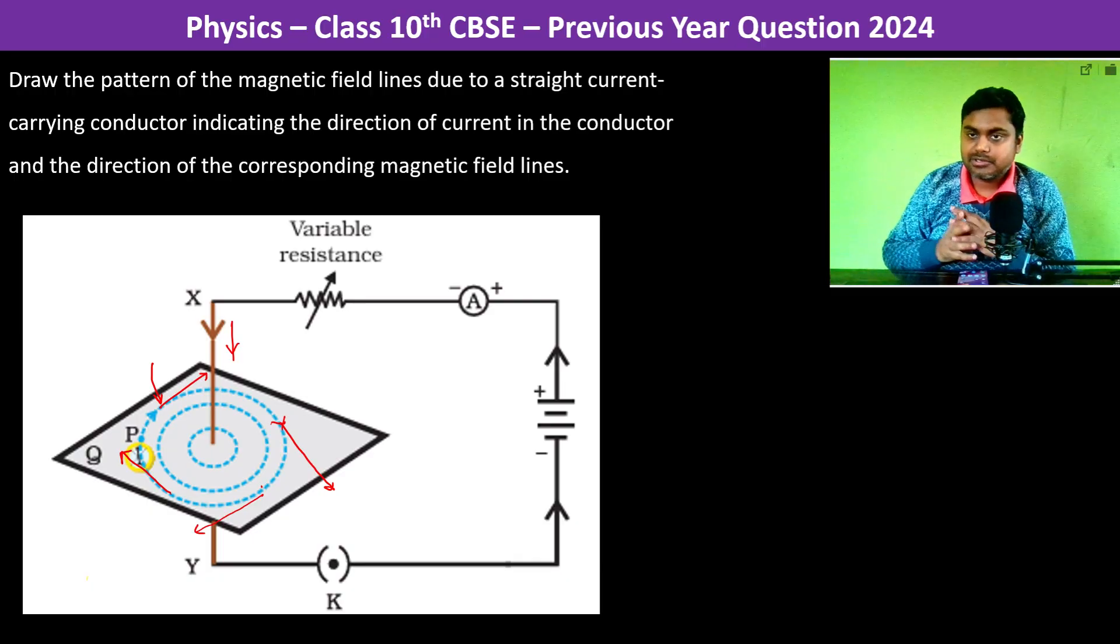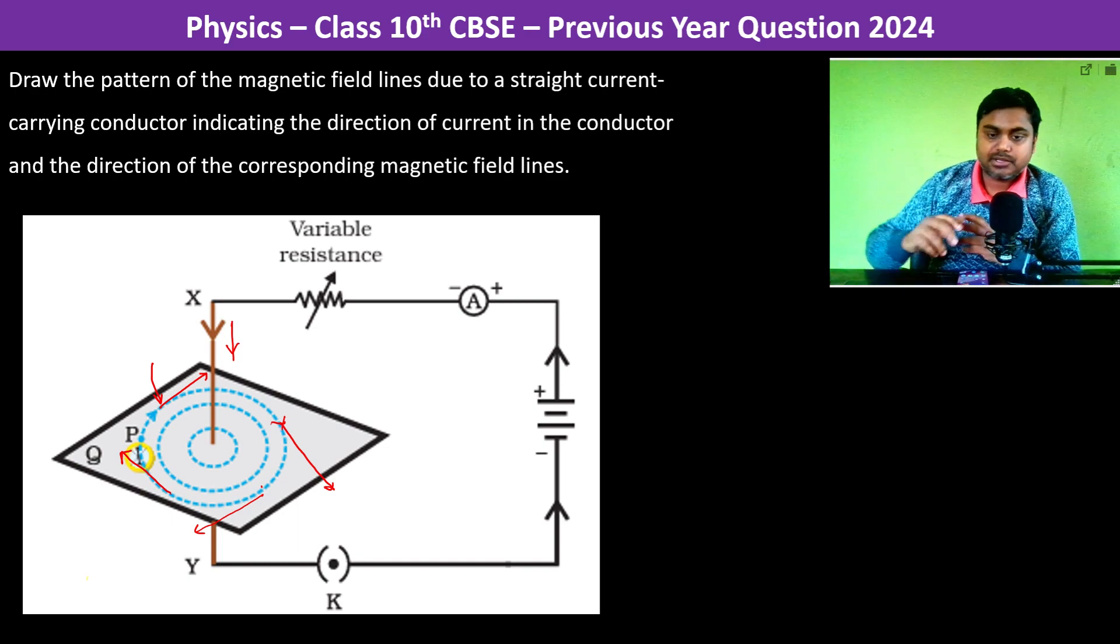The tangential direction is going to give us the direction of the magnetic field and the direction of the magnetic field lines is also as given. Thank you.